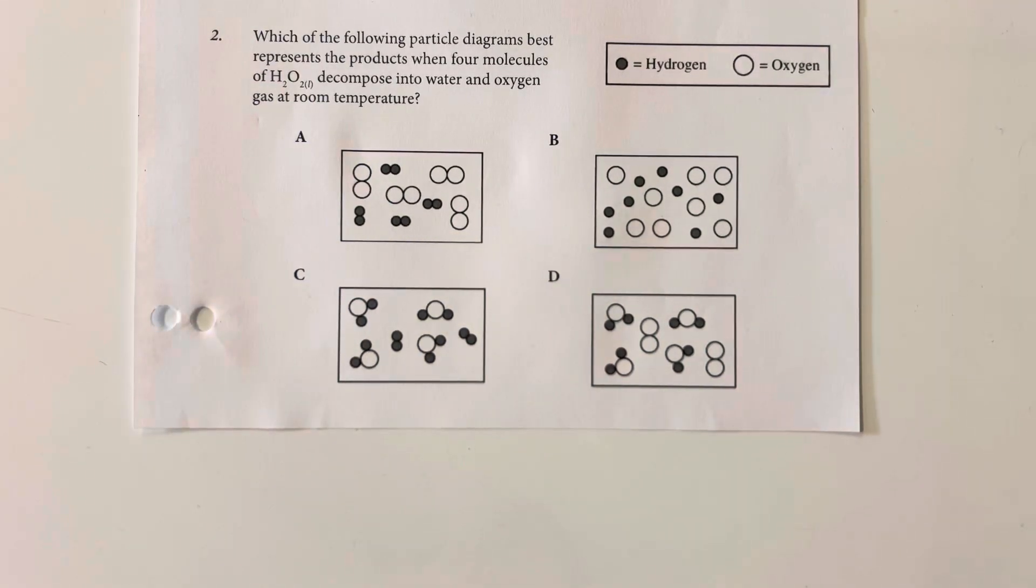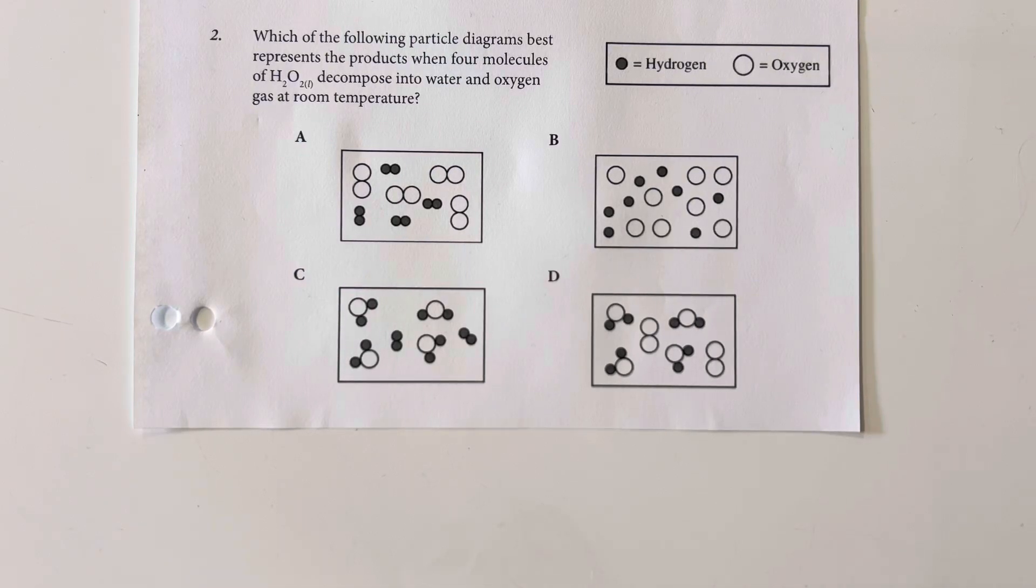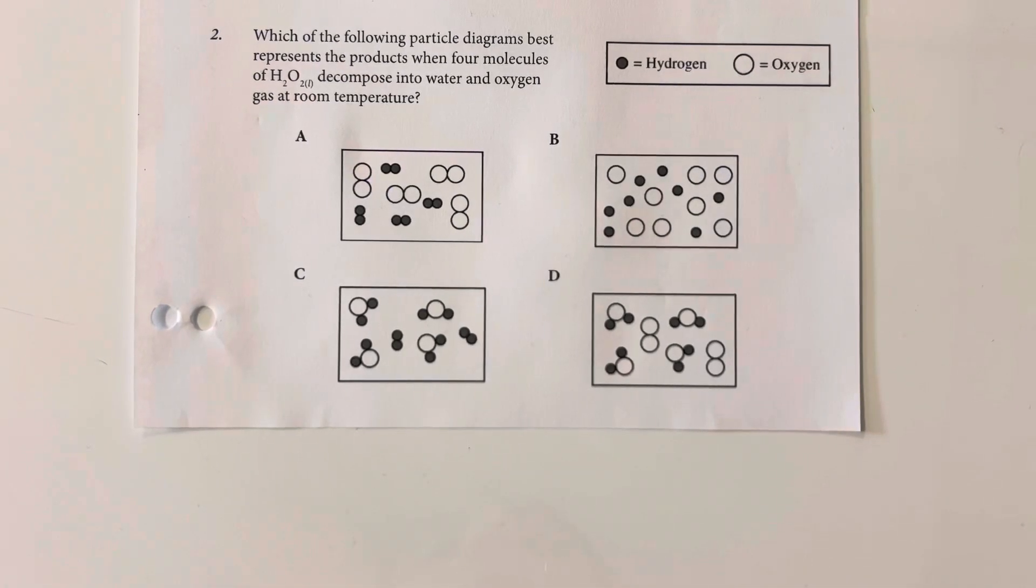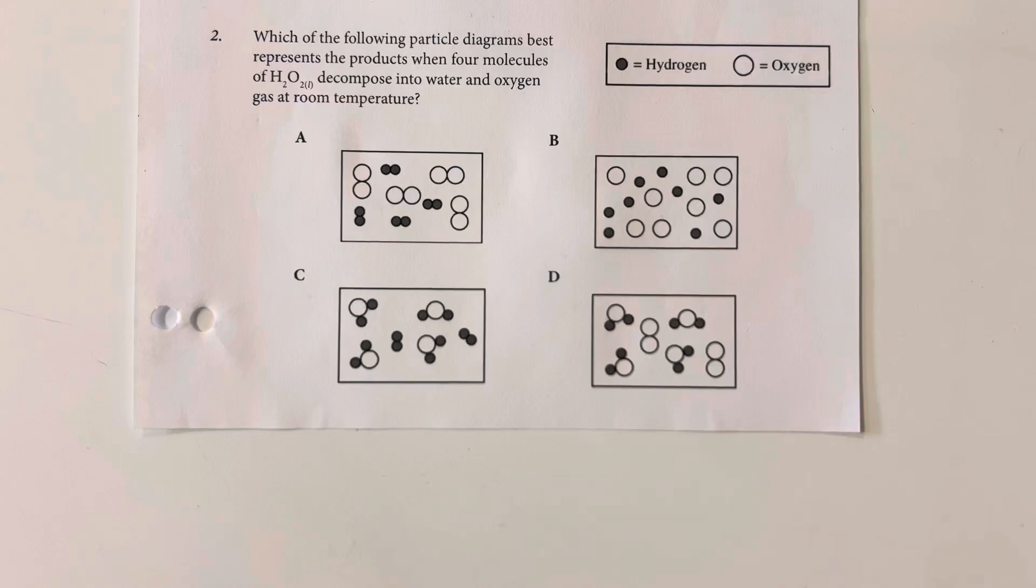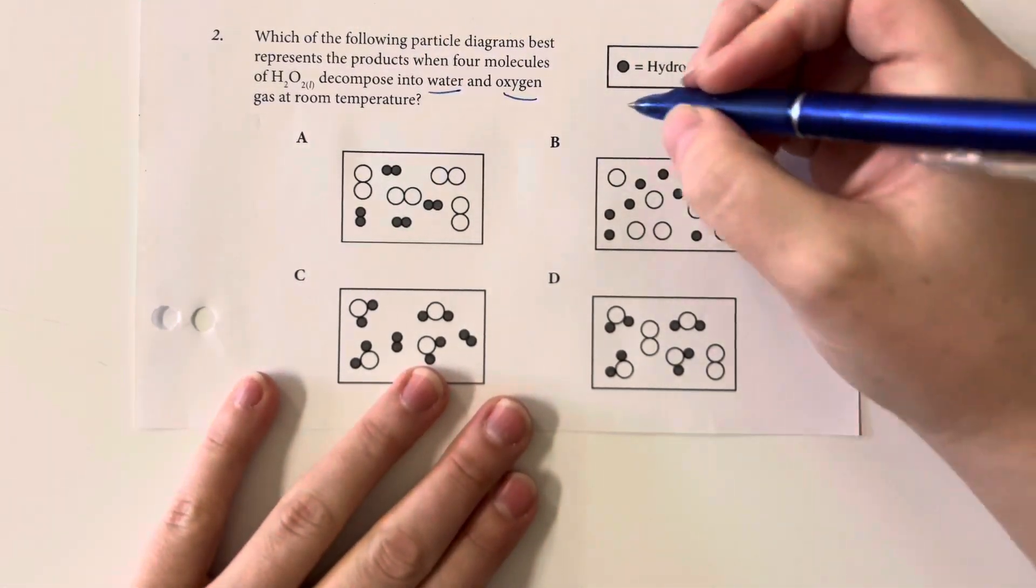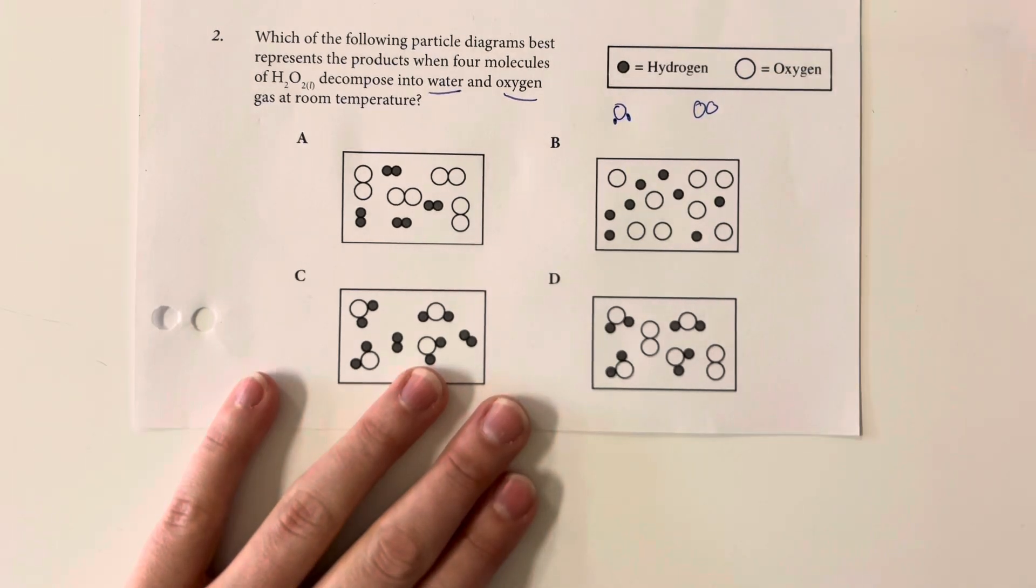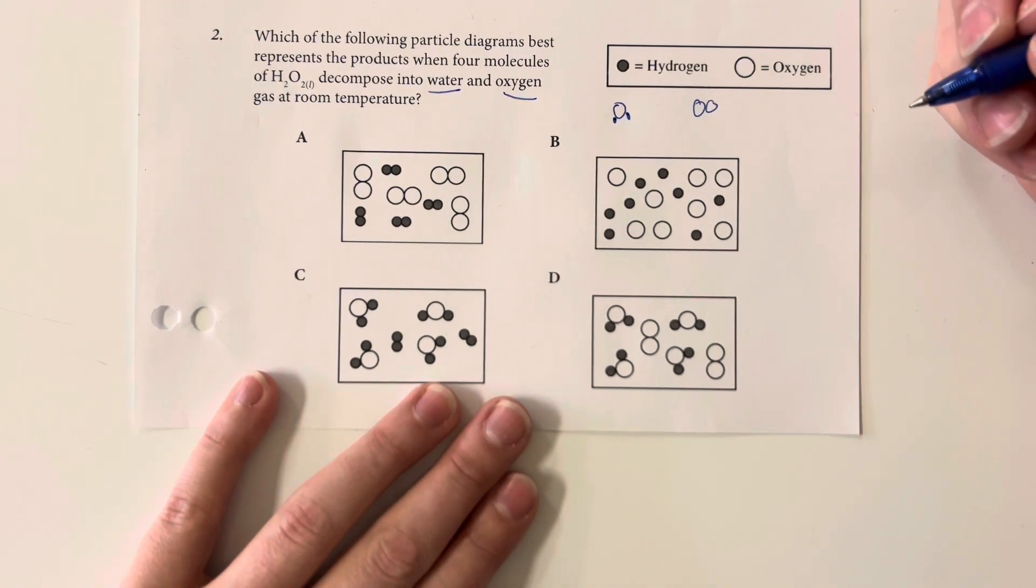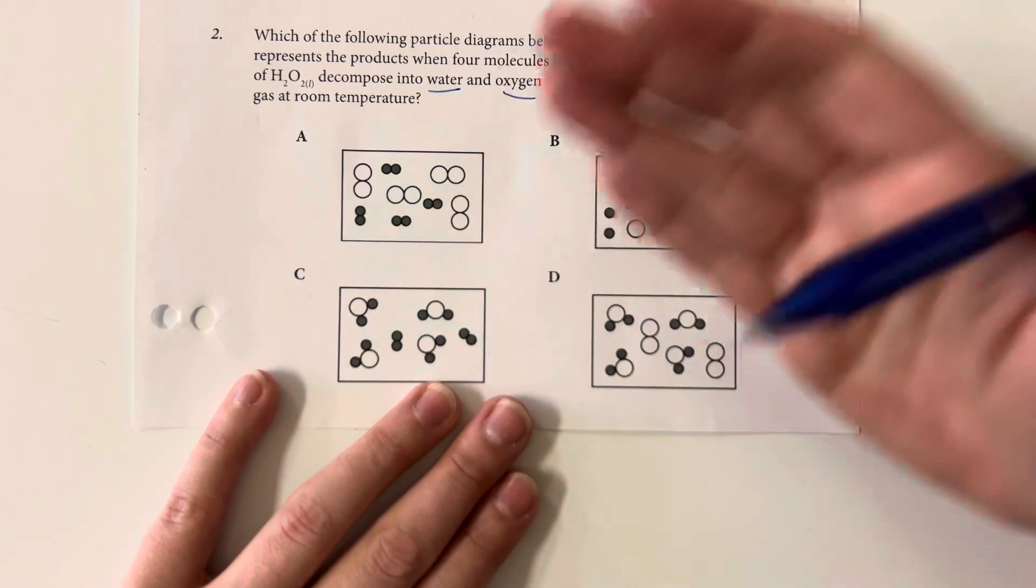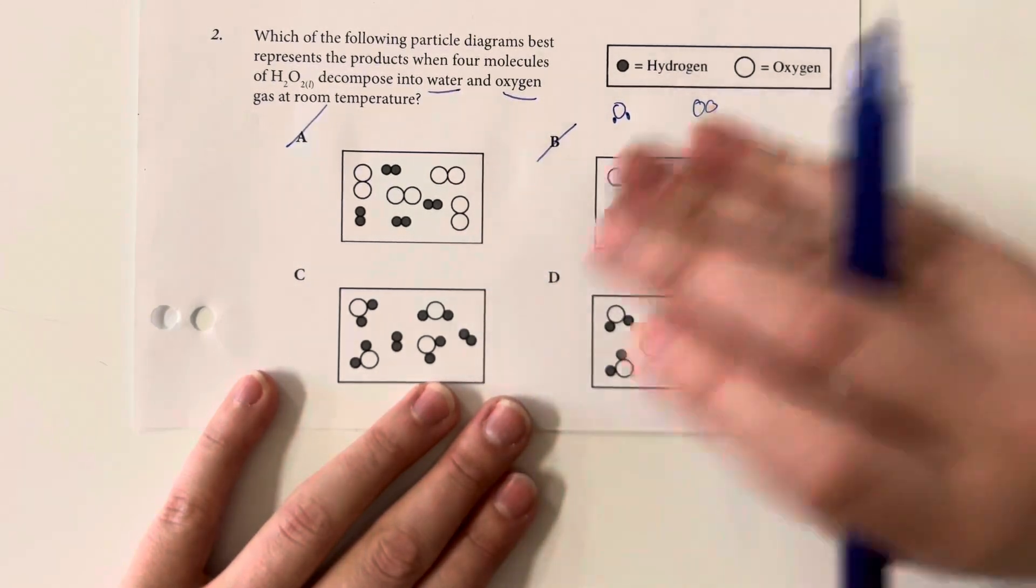Which of the following particle diagrams best represents the products when four molecules of hydrogen peroxide decompose into water and oxygen gas at room temperature? So I am going to decompose into water and oxygen, so the water molecule should look something like this and the oxygen should look something like this. B and A do not have water molecules at all.